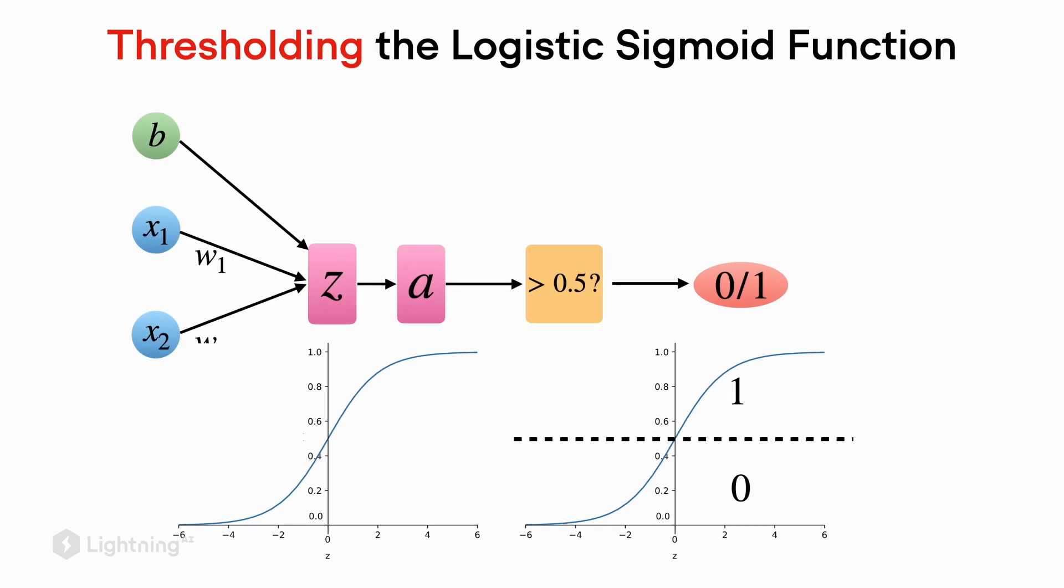Looking at the logistic sigmoid function now in the context of the logistic regression model, what happens here is that we pass the net inputs to the logistic activation function, and then we have this threshold unit which checks whether the logistic activation function is greater than point five or not. If it is greater than point five, it will return class label one. Otherwise, if it's equal or smaller than point five, it will return class label zero.